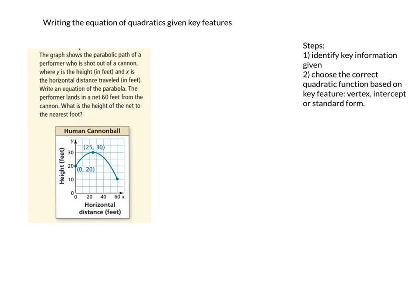So we're going to write down our important information. I have some steps written over here and we'll finish those a little bit later. Identify the key information. The key information here is our vertex, which is (25, 30). And we have a y-intercept, another point of (0, 20). Now if I'm given the vertex, it should make sense that I should probably use vertex form.